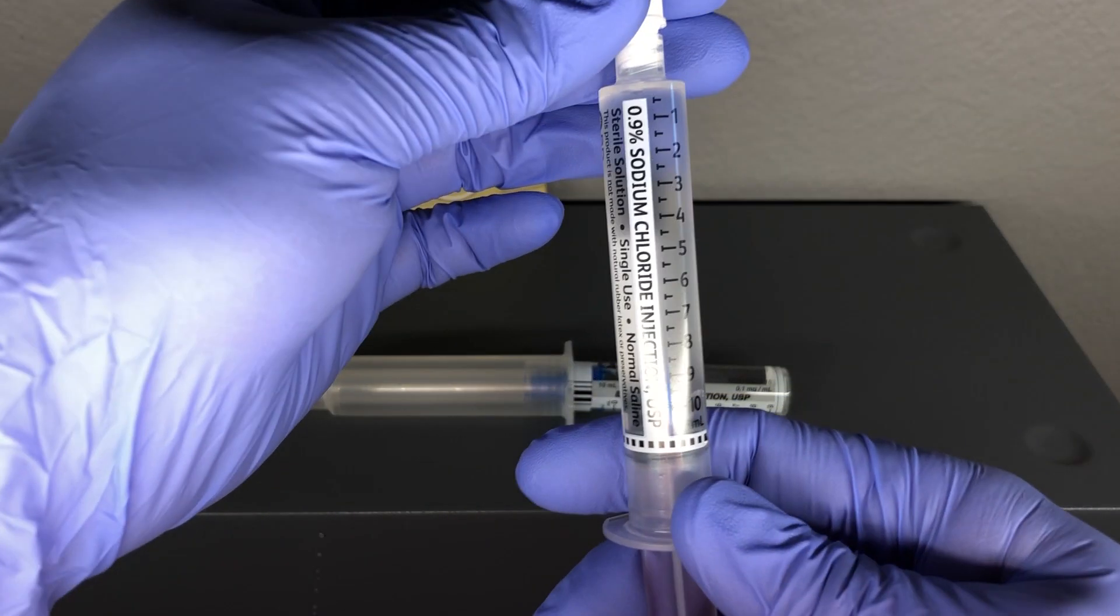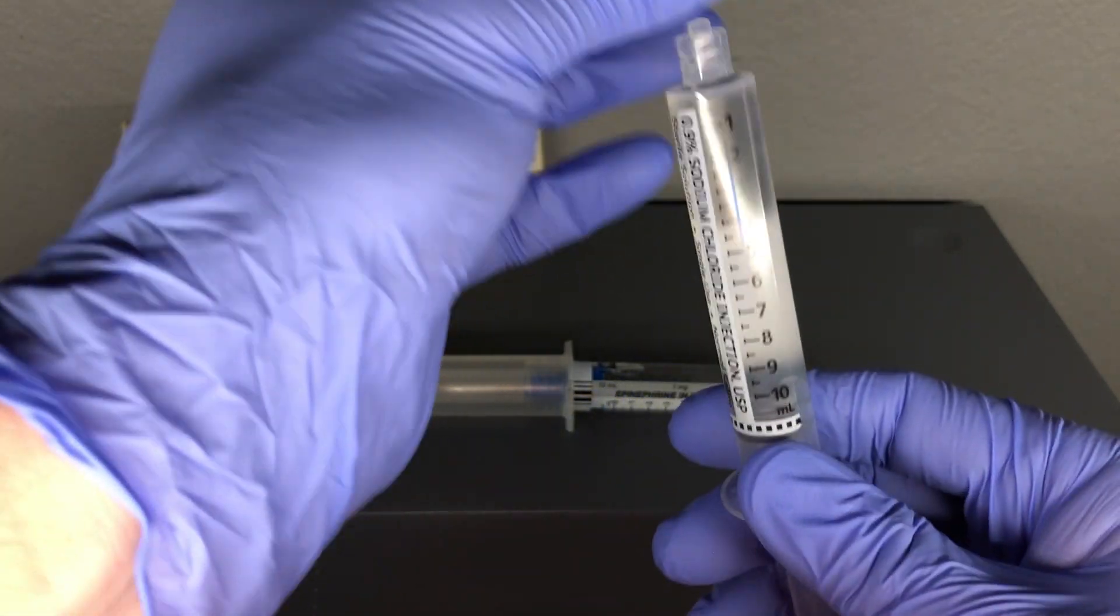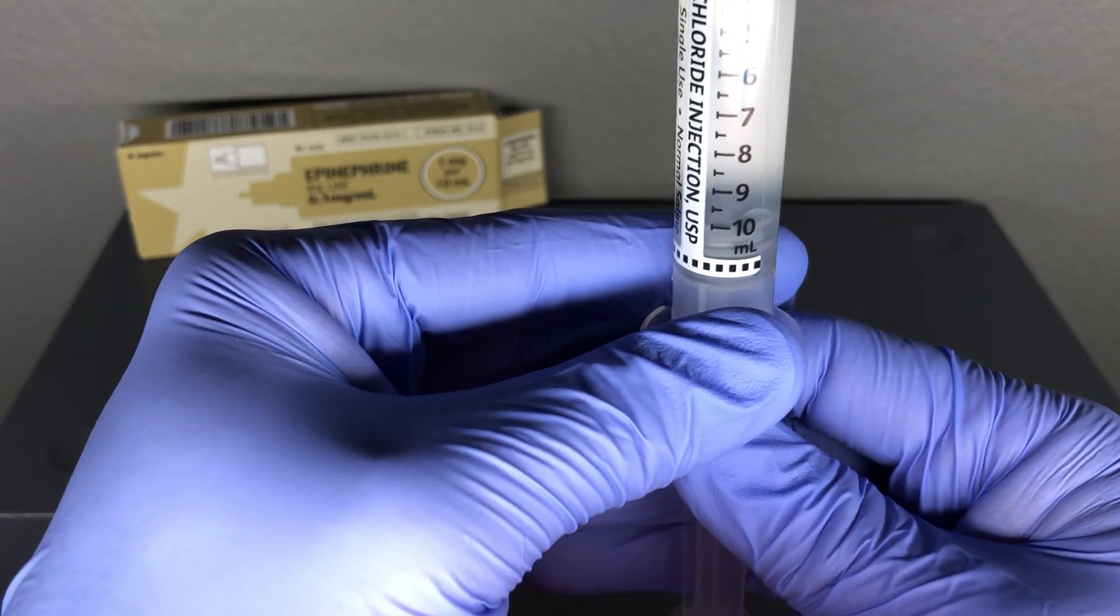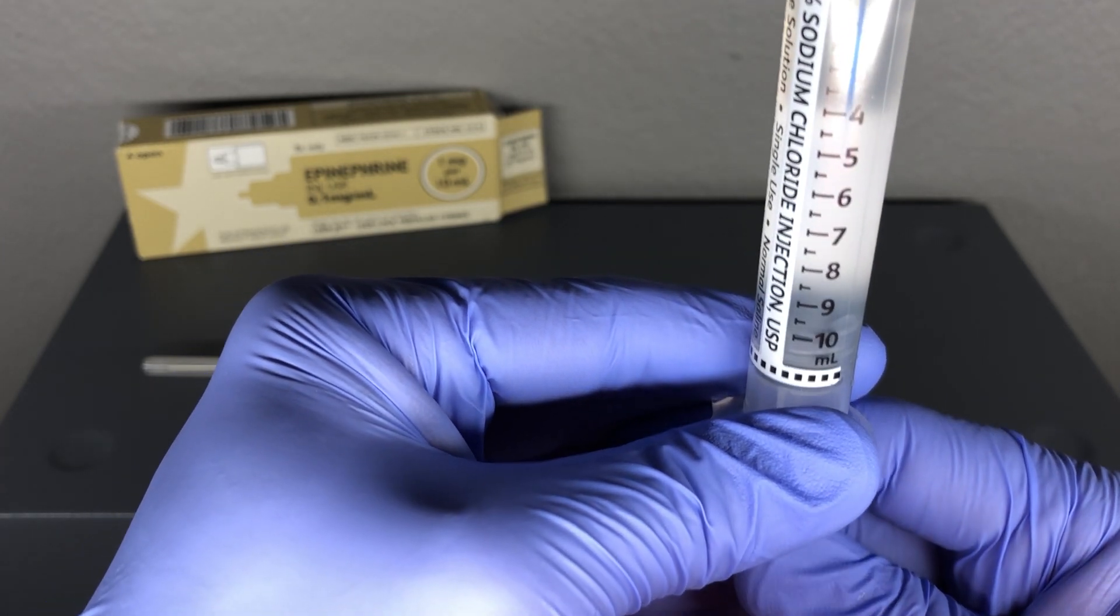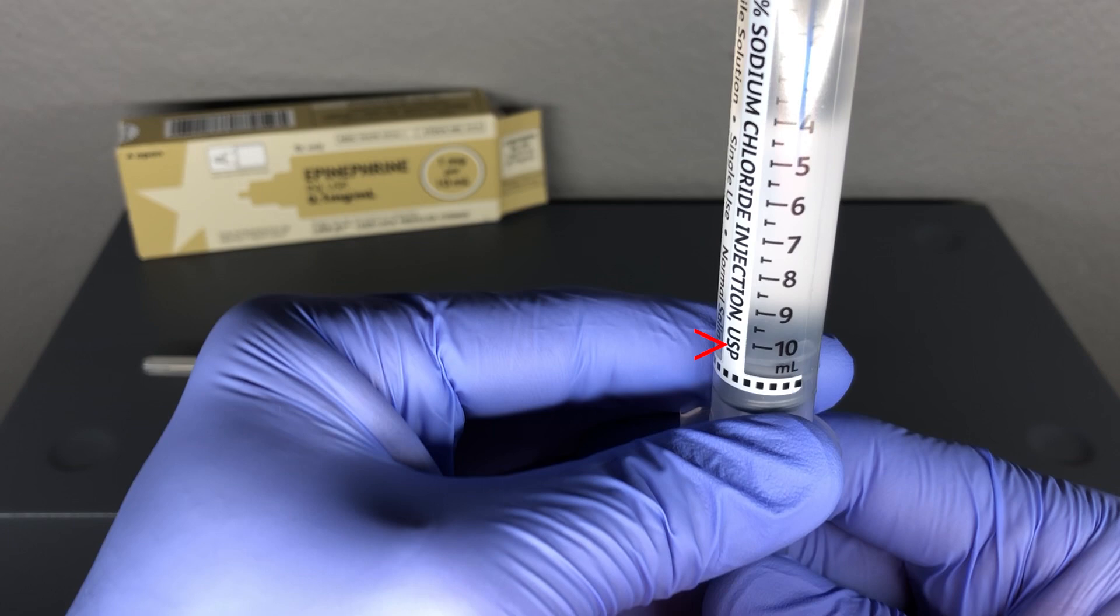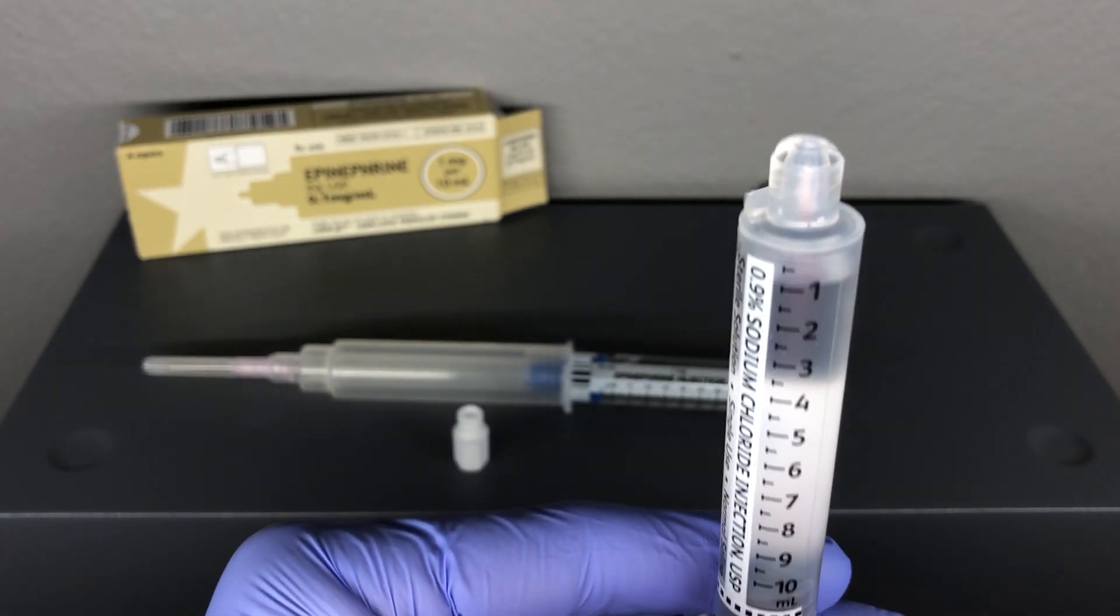Take a 10 milliliter saline flush and remove the cap and save it. Squirt out one milliliter and then pull the plunger back to the 10 milliliter mark so there is one milliliter of empty space at the top of the syringe.